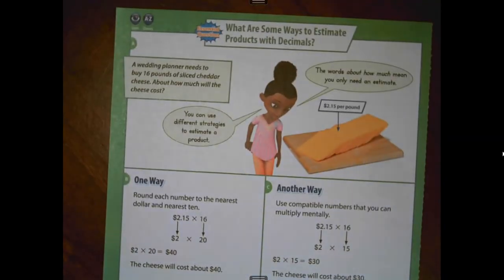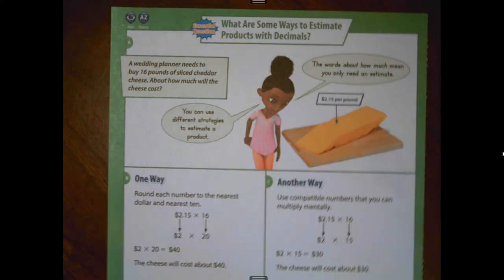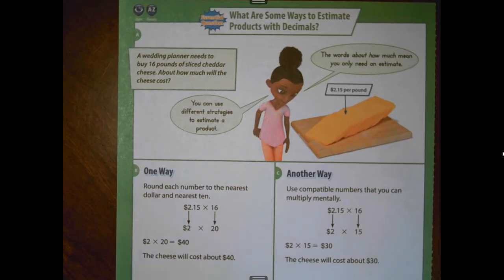Our essential question that is going to guide us through our lesson is, what are some ways to estimate products with decimals? And just like with whole numbers, we are going to look at two ways that we have already studied. One way is we're going to use rounding. The second way, we're going to use compatible numbers. So let's look at the situation.